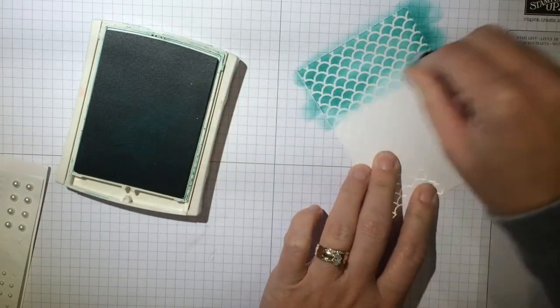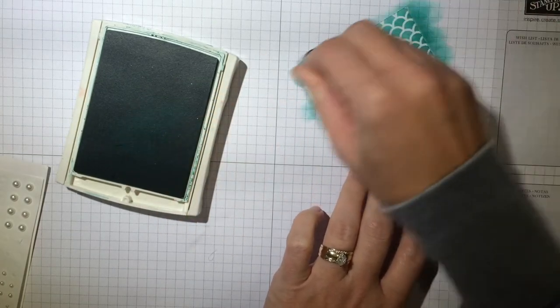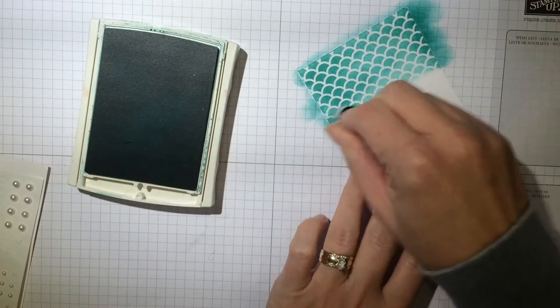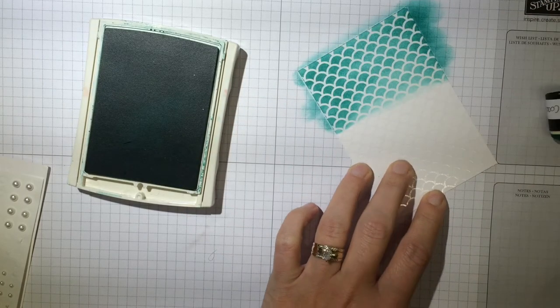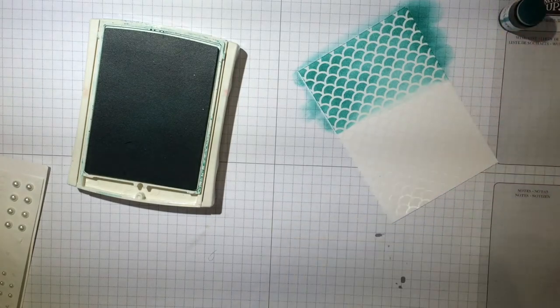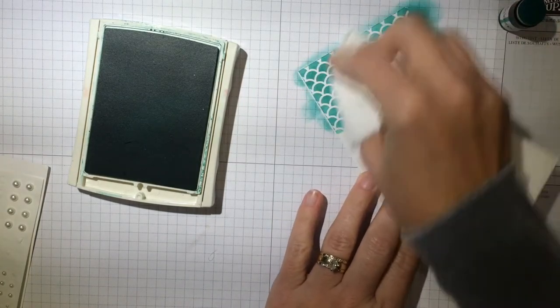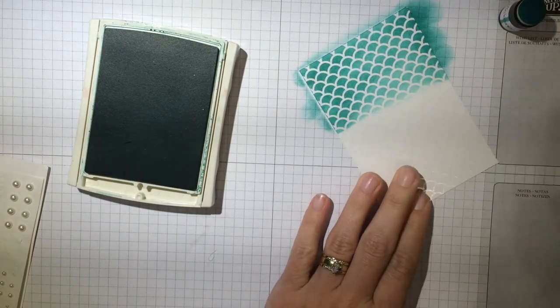And one reason I like this over the brayer is that the brayer uses lots and lots of ink. And I feel like the daubers don't quite use as much ink. So I take a paper towel and get it all off of that glossy surface.